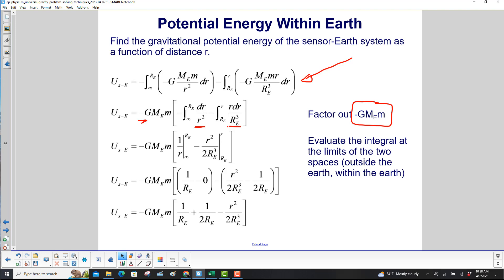We perform the integration, and then we have our limits here. The integration of 1 over r squared gives you negative 1 over r, and the integral of r gives you r squared over 2.